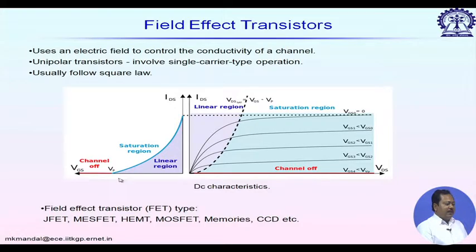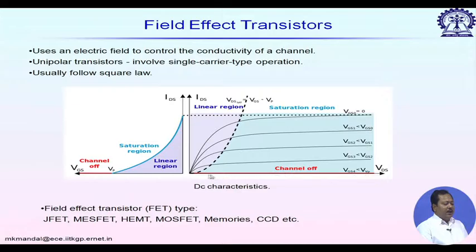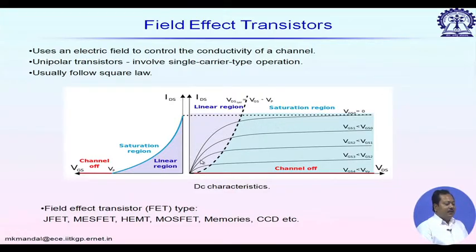Looking at the MOSFET transfer characteristics and output characteristics, the drain-to-source current I_DS is a function of gate-to-source voltage V_GS, so we can control the drain current by controlling V_GS. In the output characteristics, after the pinch-off or saturation region, there is almost no change in I_DS with increasing V_DS. In saturation, the MOSFET can be represented by a current source whose value is controlled by V_GS; below saturation it behaves as a linear resistance.